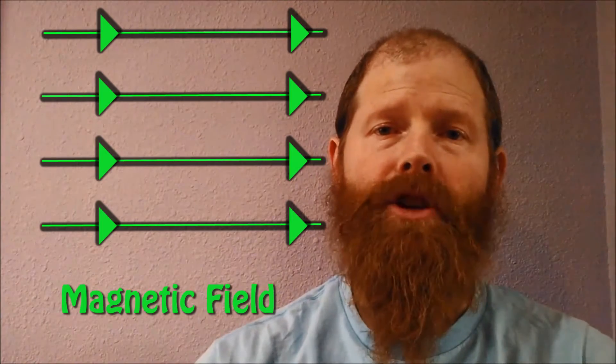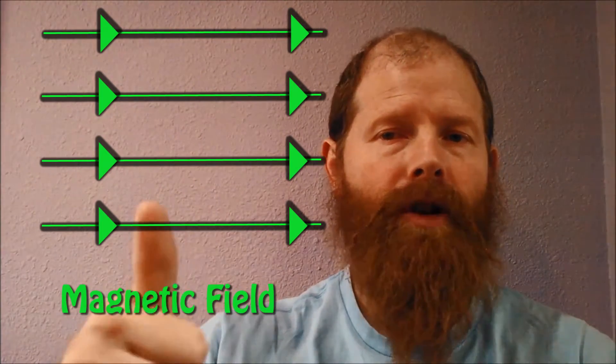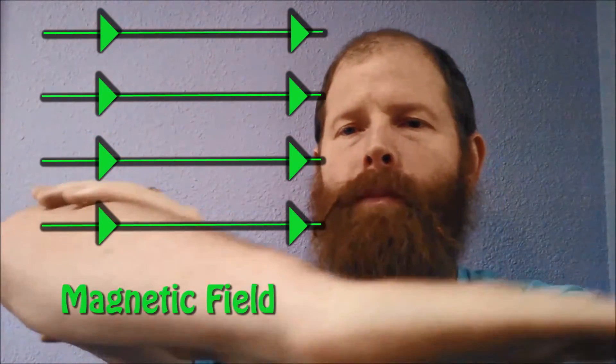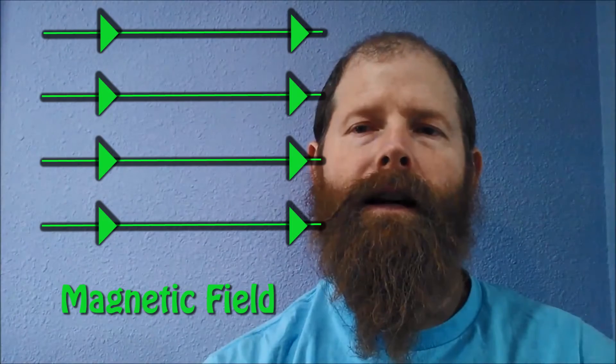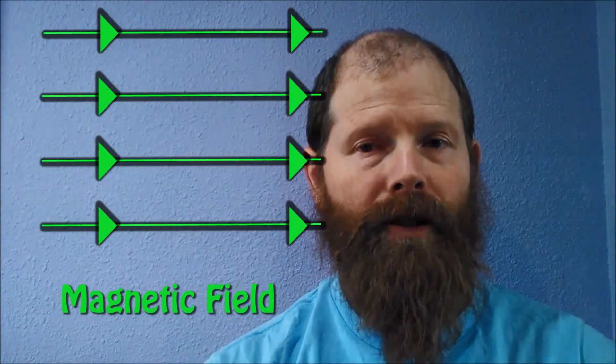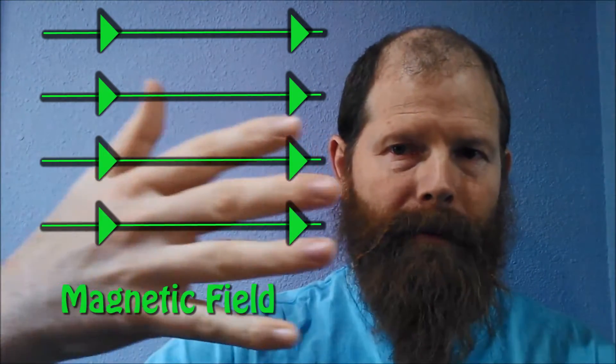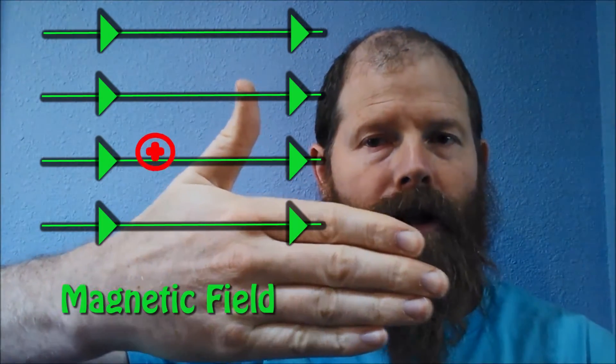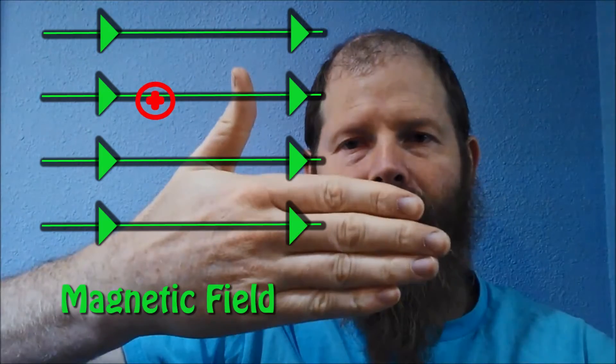Once you've got the direction of the conventional current, you put your entire forearm in the direction that the magnetic field is pointing. So if our pre-existing magnetic field is pointing this way, we put our arm this way. If our proton is moving up, we put our thumb in this direction. And the direction the proton will be pushed is the direction your palm is facing — so that's facing away from you.